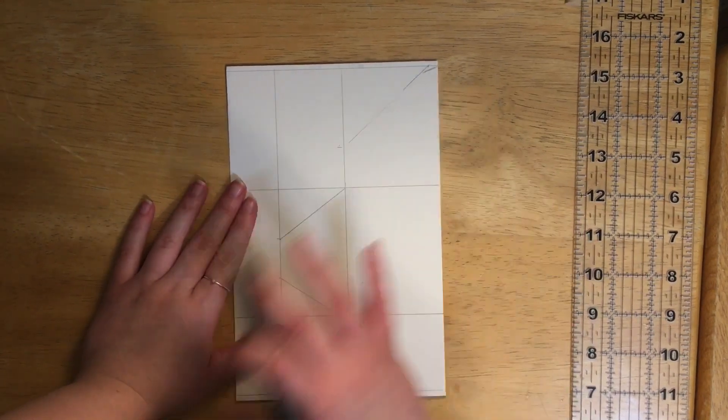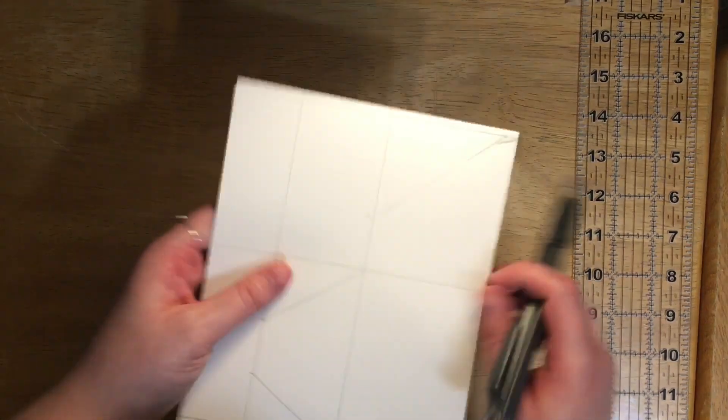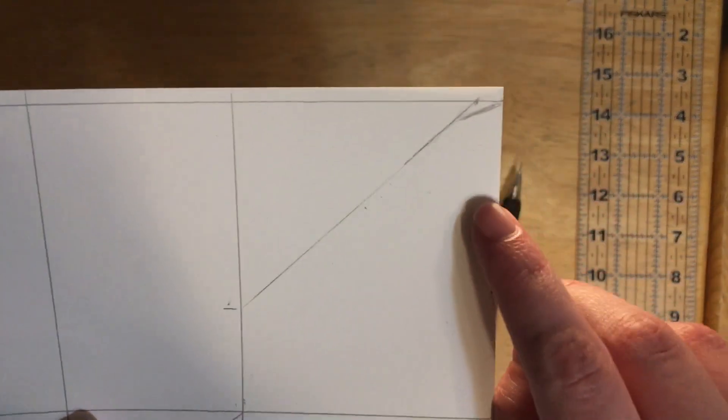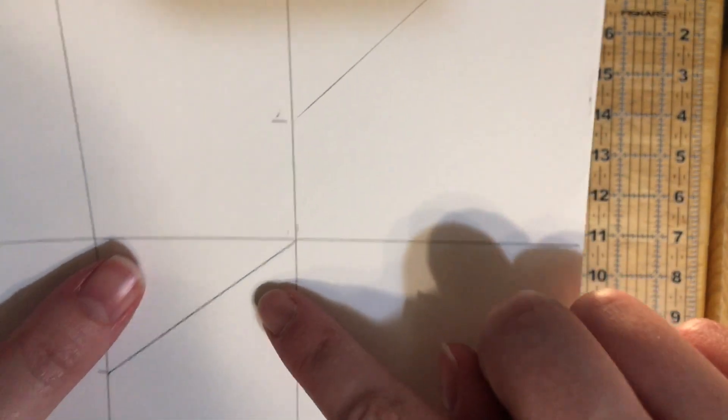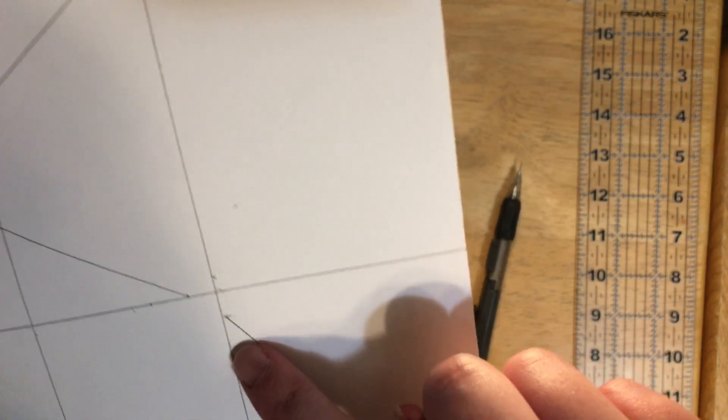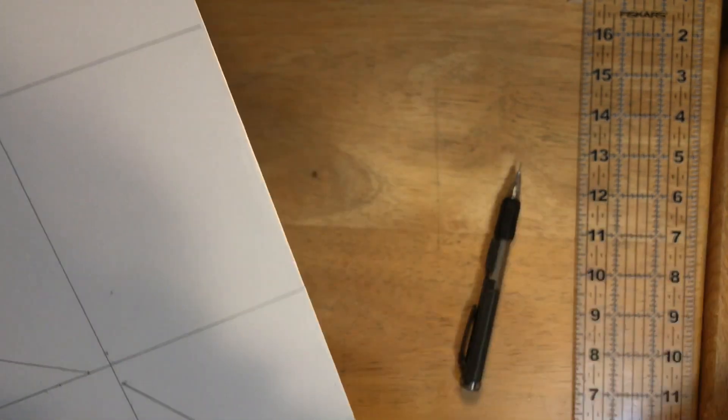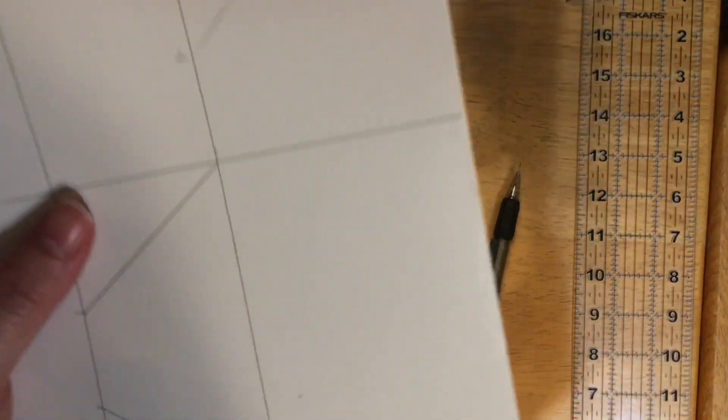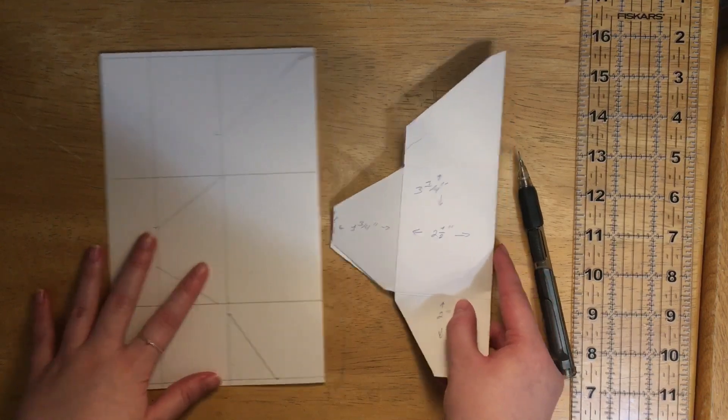So once you've gotten to this point you're going to cut here. I'm not going to show you, you're going to cut along here, here, here, here, here, and then there. Okay, and so this is what it's going to look like. So set that down. This is what it should look like once you've cut it out.